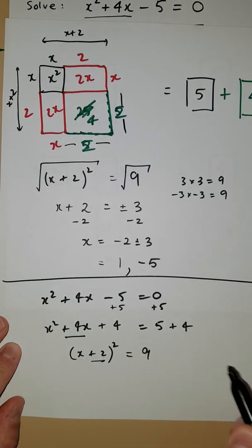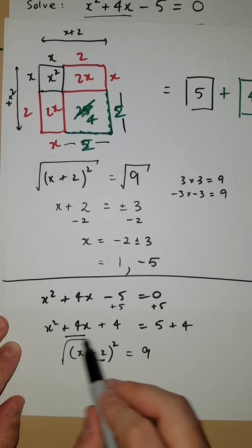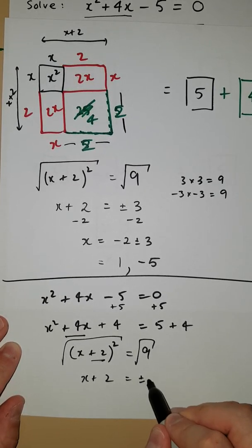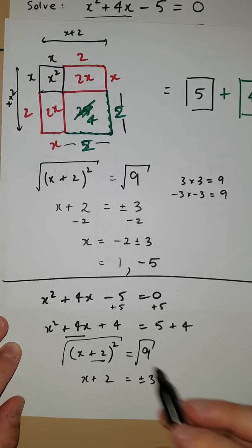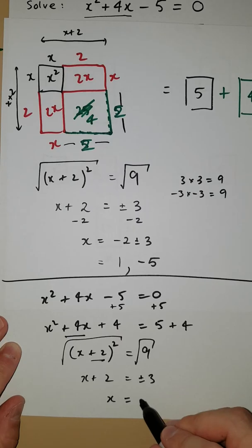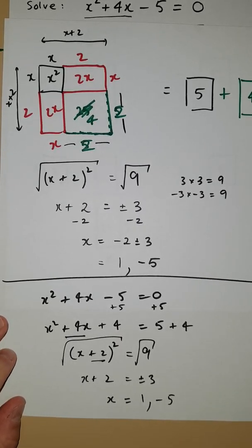Over here we end up with 9. Now if we square root both sides, we end up with x + 2 = ±3. And then again we're just back up here, which leads us with solutions of 1 and -5.